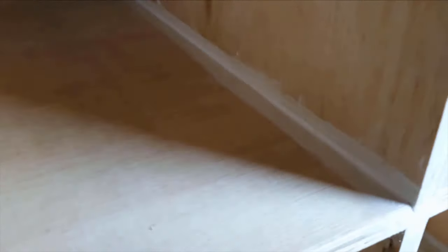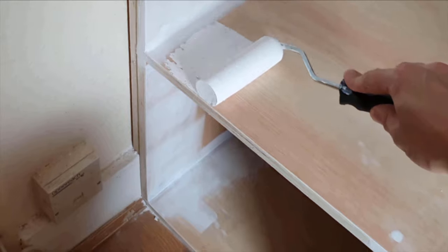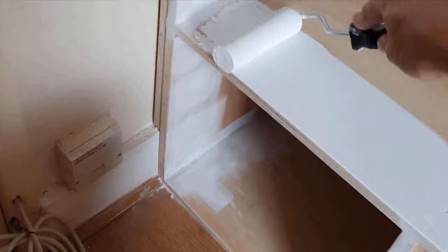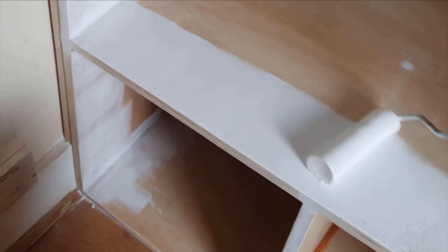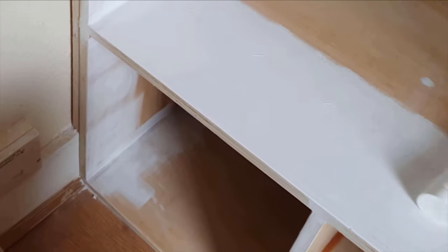After sanding everything nice and smooth finally I could start painting the inside and edges of the staircase. I ended up adding three layers of white paint and one layer of poly to protect the wood.